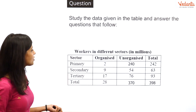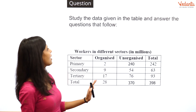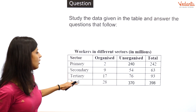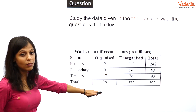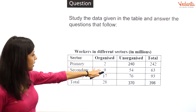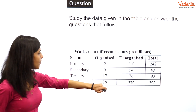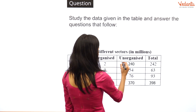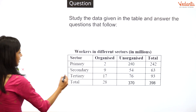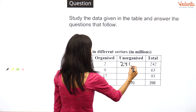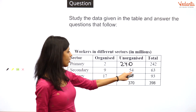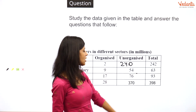The next question involves a data table and asks you to answer questions based on it. You have primary, secondary, and tertiary sectors divided into organized and unorganized sectors. In the organized primary sector, workers are 2 million; in the unorganized primary sector, approximately 240 million. In secondary, organized is 9 million and unorganized is 54 million, totaling 63 million.